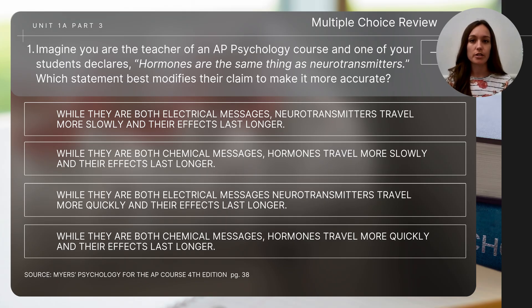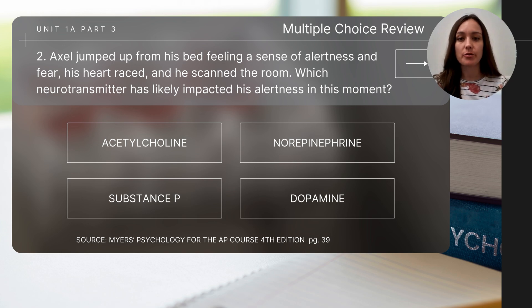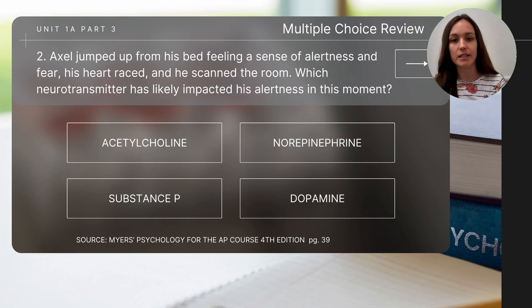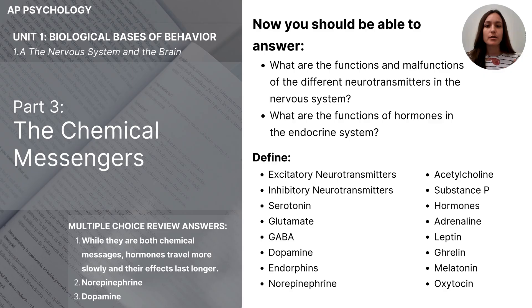To close out this video, let's do a few short review questions. I'll read each question out loud, but you'll need to pause the video to determine the answer. The correct answers will be on the last slide. Question one: Imagine you are the teacher of an AP psychology course and a student declares hormones are the same thing as neurotransmitters — which statement best modifies their claim to make it more accurate? Question two: Axel jumped from his bed feeling alertness and fear, with his heart racing — which neurotransmitter likely impacted his alertness? Question three: Leah has been diagnosed with schizophrenia — which neurotransmitter most likely contributed to this disorder? This concludes part three, the chemical messengers of unit one, biological basis of behavior.